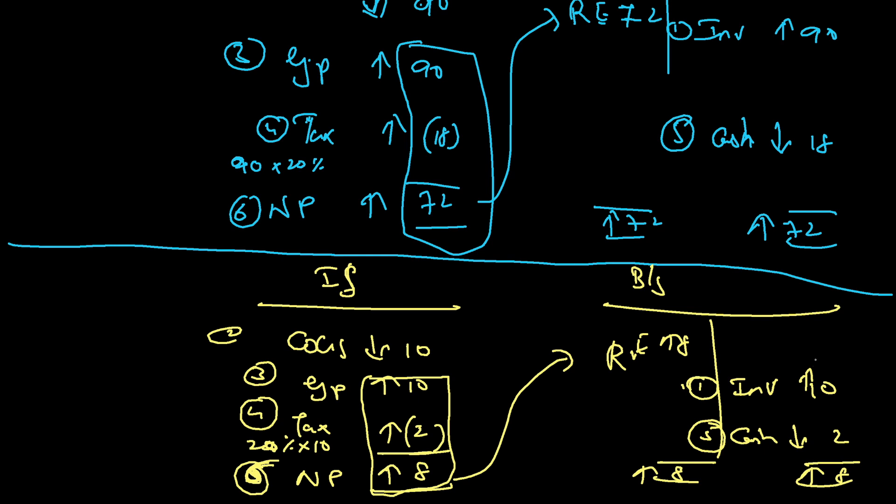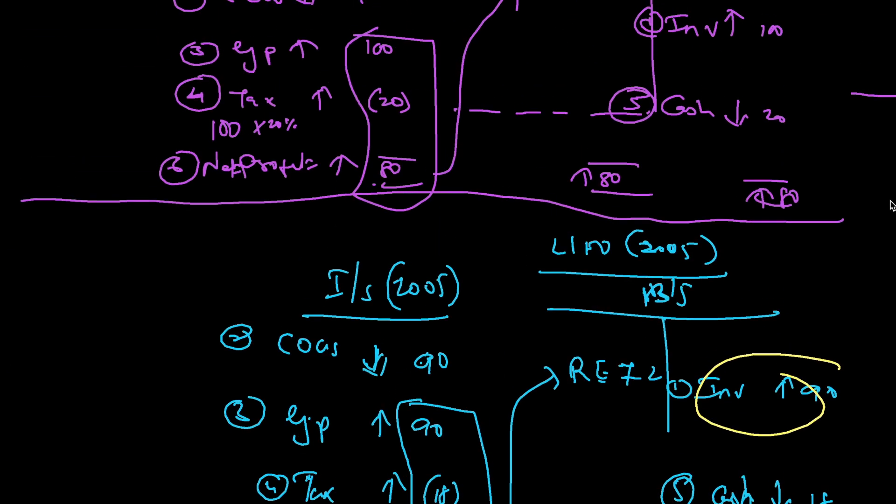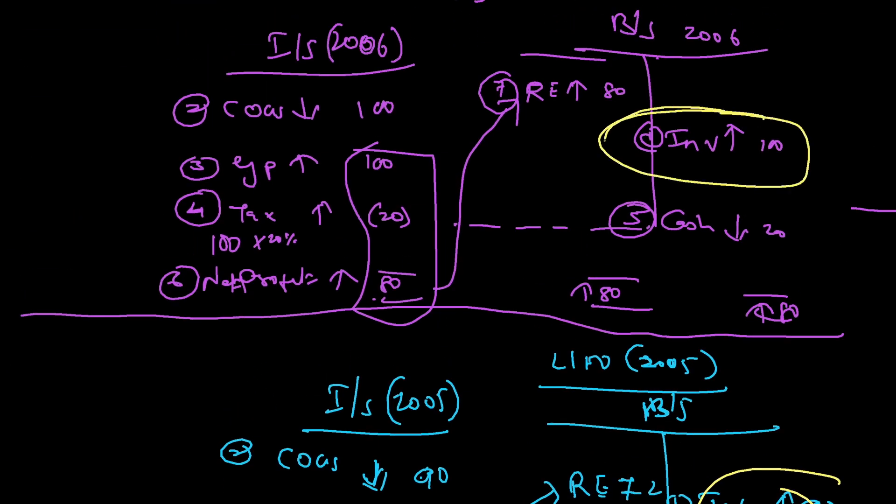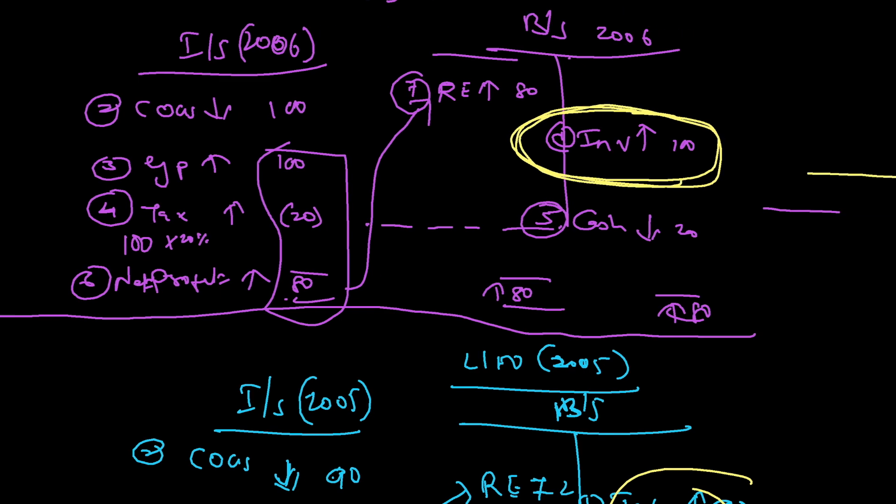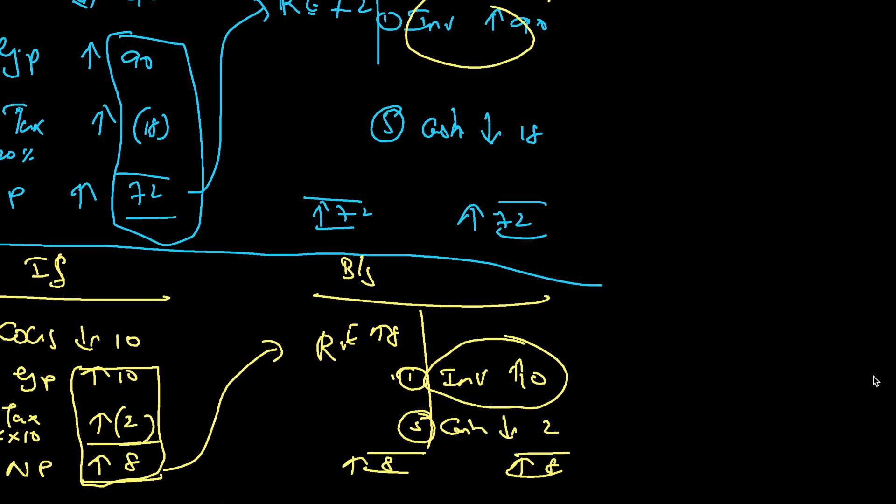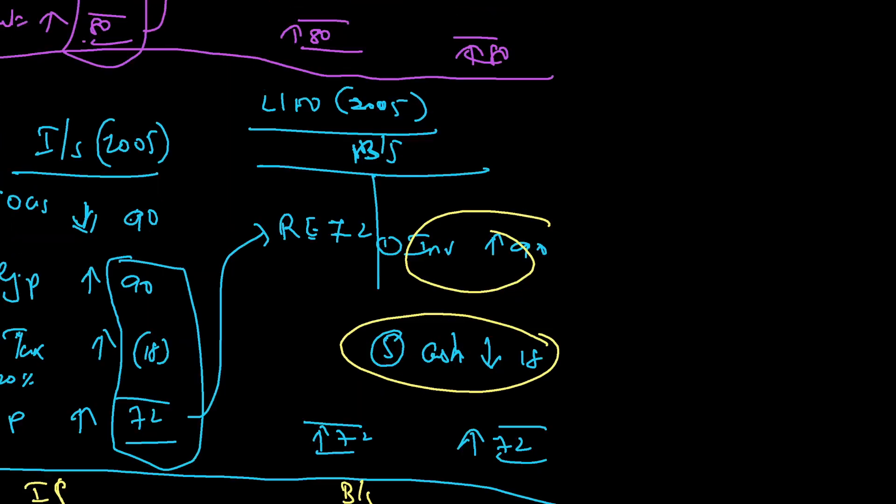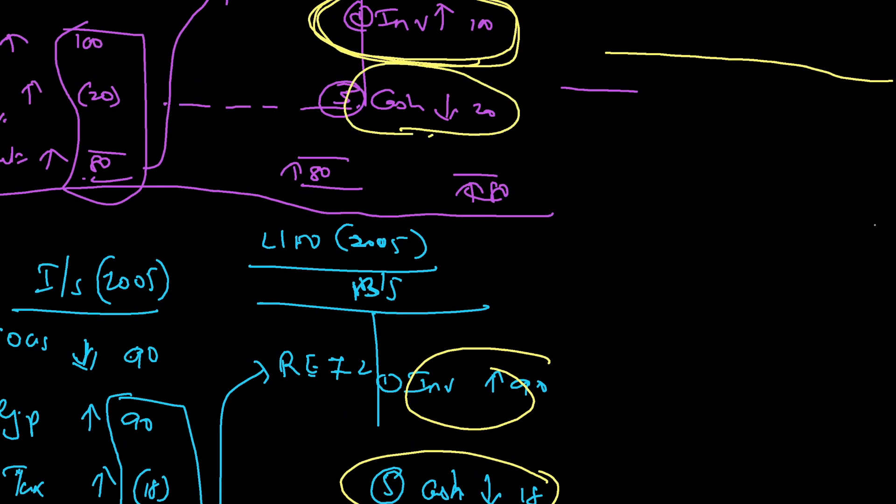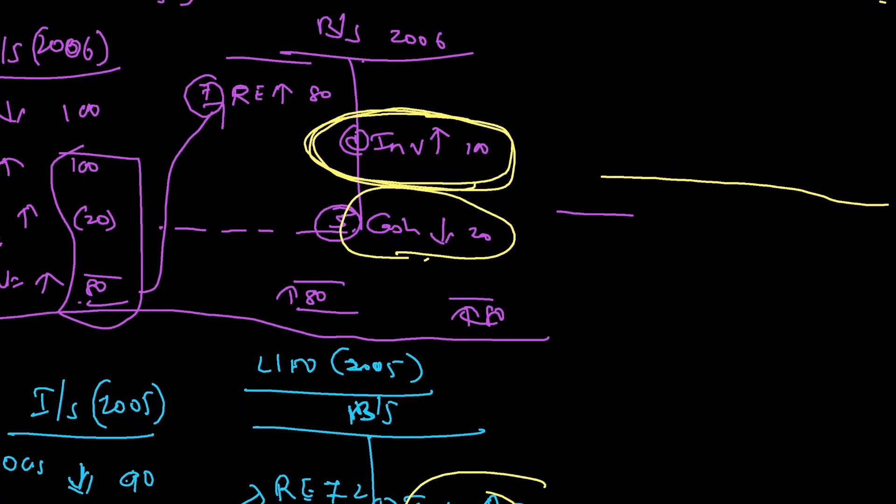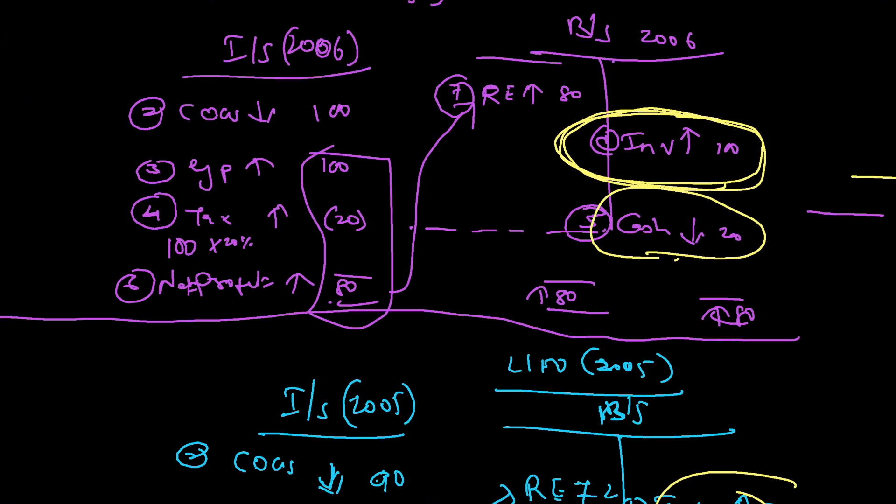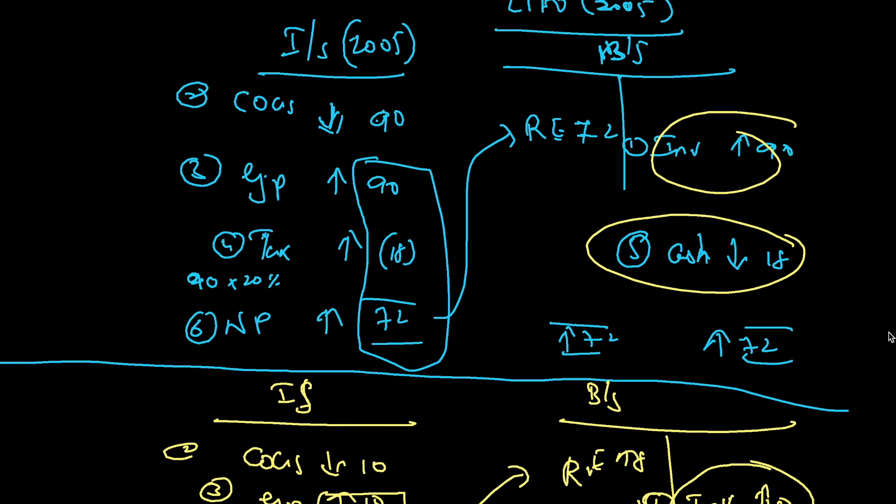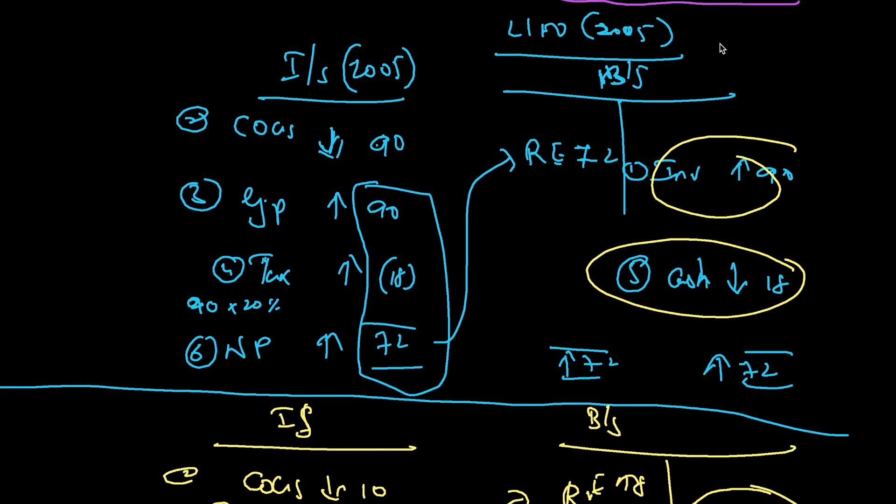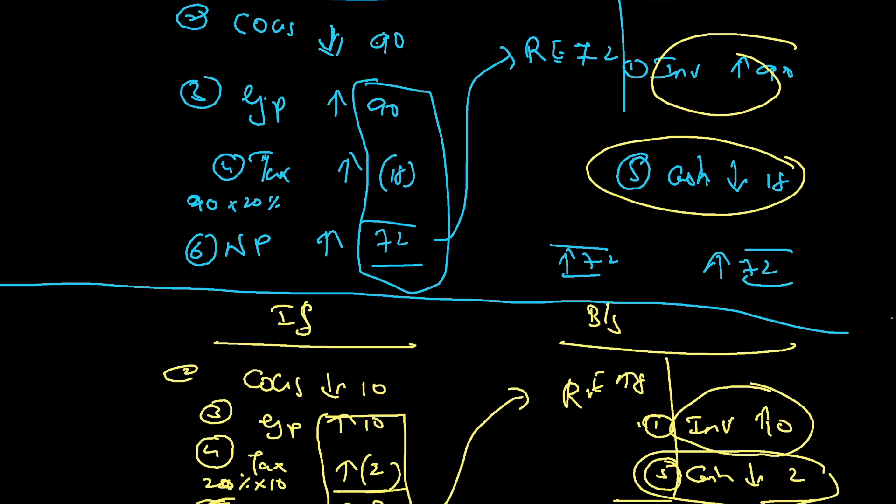Now you see, this inventory 10 and 90 is how it reaches 100. I'm doing this in one shot. Similarly, cash is going down by 2 and by 18, so overall going down by 20. This is done in one shot for 2006. If you want the bifurcations, that bifurcation I've given over here. But otherwise, doing only this much is enough.